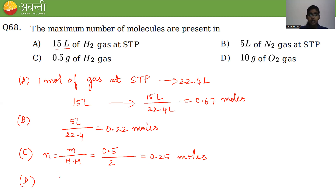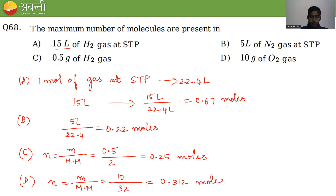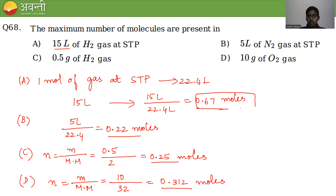For option D — 10 g of O₂: molar mass of O₂ is 32, so moles = 10/32 = 0.312 mol. Comparing all options, option A has the highest number of moles (0.67), which means it contains the maximum number of molecules. Option A is the correct answer.